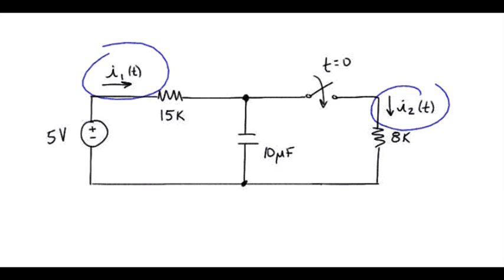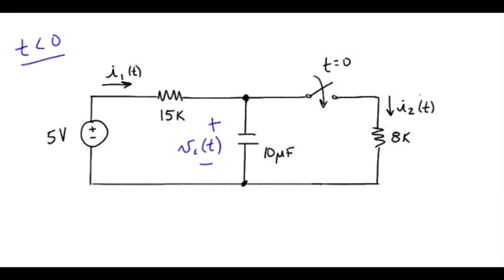We've got a capacitor in there, so we need to find the initial conditions on that. We need to make an assignment for our capacitor voltage. Let me first set up the circuit for T less than zero so we can find the initial condition on that capacitor.